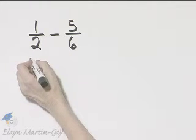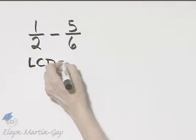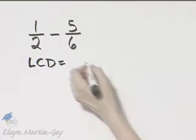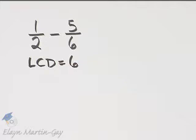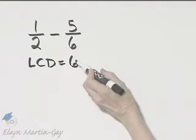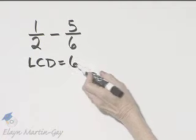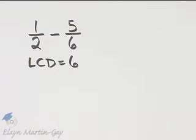So let's first decide upon the least common denominator. The least common denominator is 6 because 6 is the smallest number that both denominators divide into evenly.